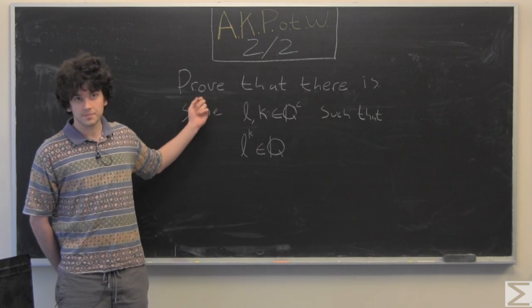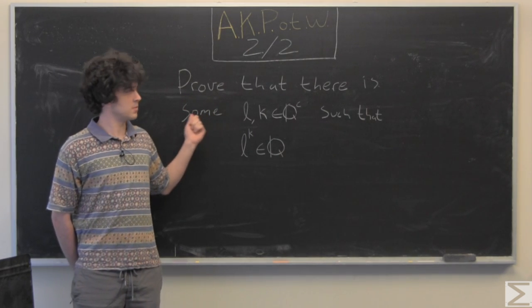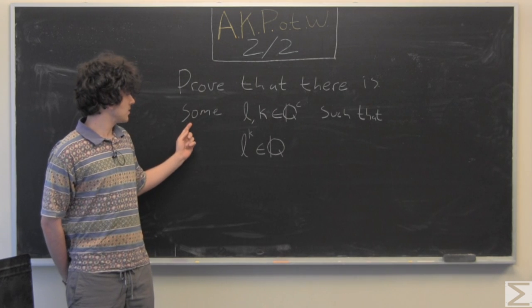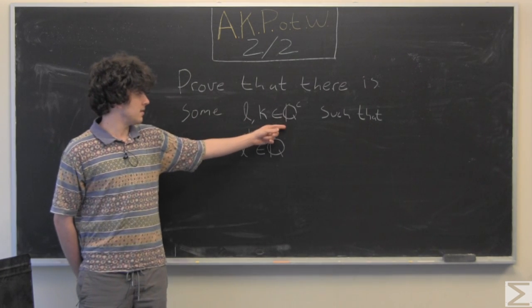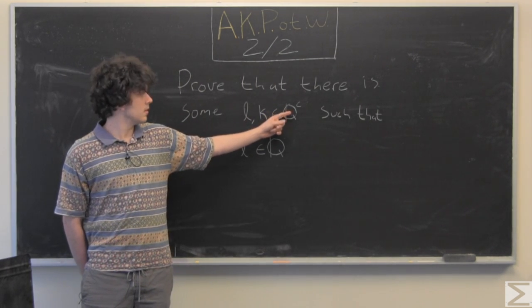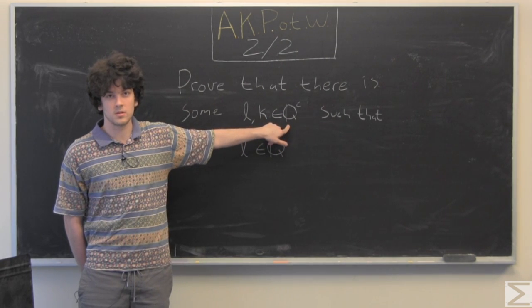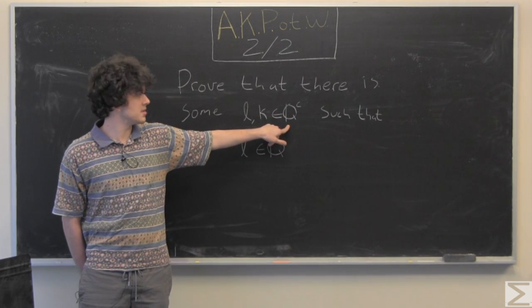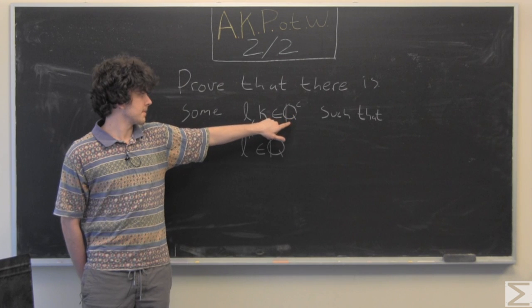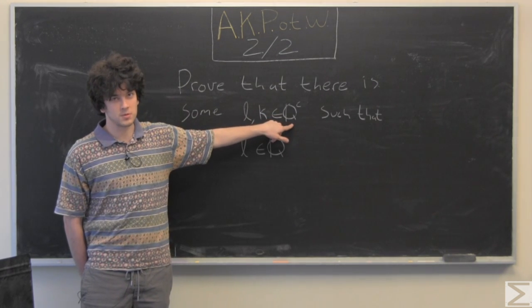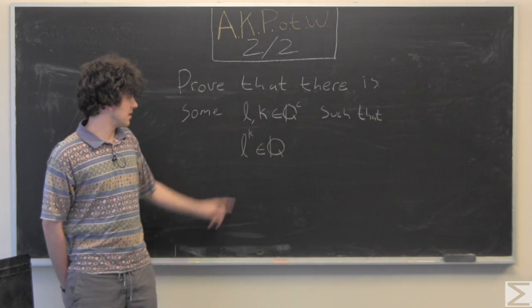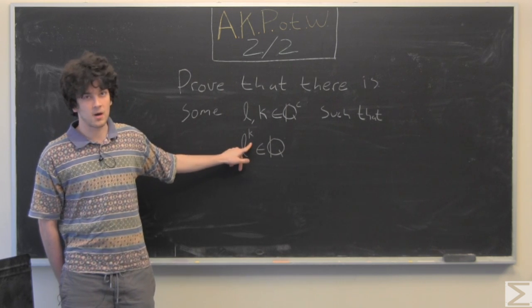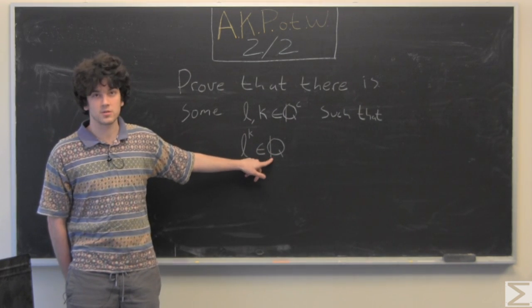The question this week is we're looking for some L and K in the complement of the rationals, which is going to be denoted by this boldface Q, in the complement of the rationals being the irrationals, such that L raised to the power of K is a rational number.